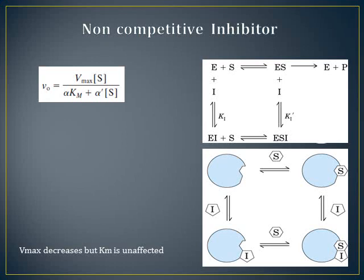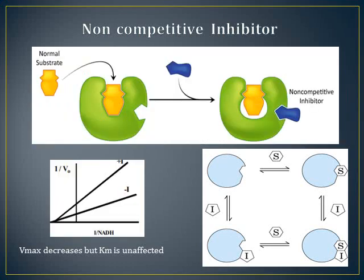The third type of reversible inhibition is non-competitive inhibition, where the inhibitor reduces the activity of the enzyme and binds equally well to the enzyme whether or not it has already bound the substrate. In this case, the inhibitor binds to the allosteric site of the enzyme and produces plots with the same x-intercept, so Km is unaffected, but different slopes and y-intercepts. As seen on the Lineweaver-Burk plot, Vmax decreases but Km is unaffected.